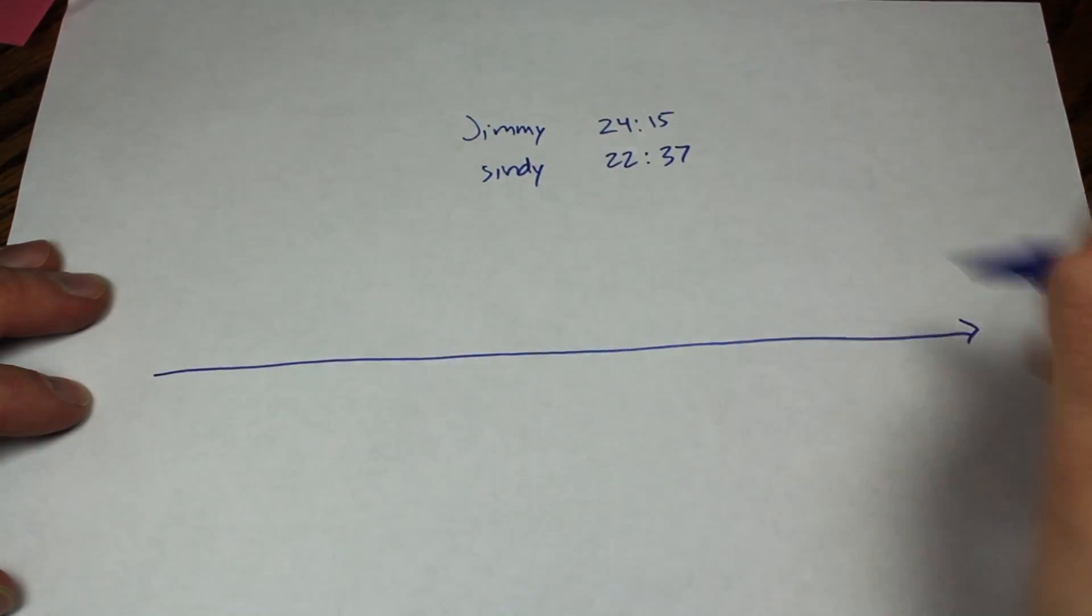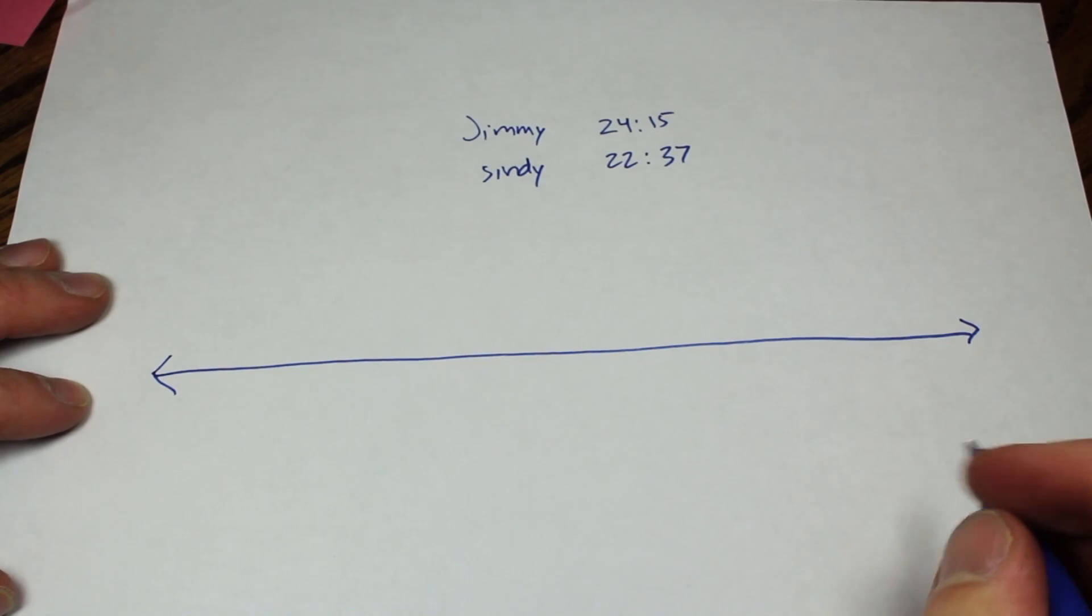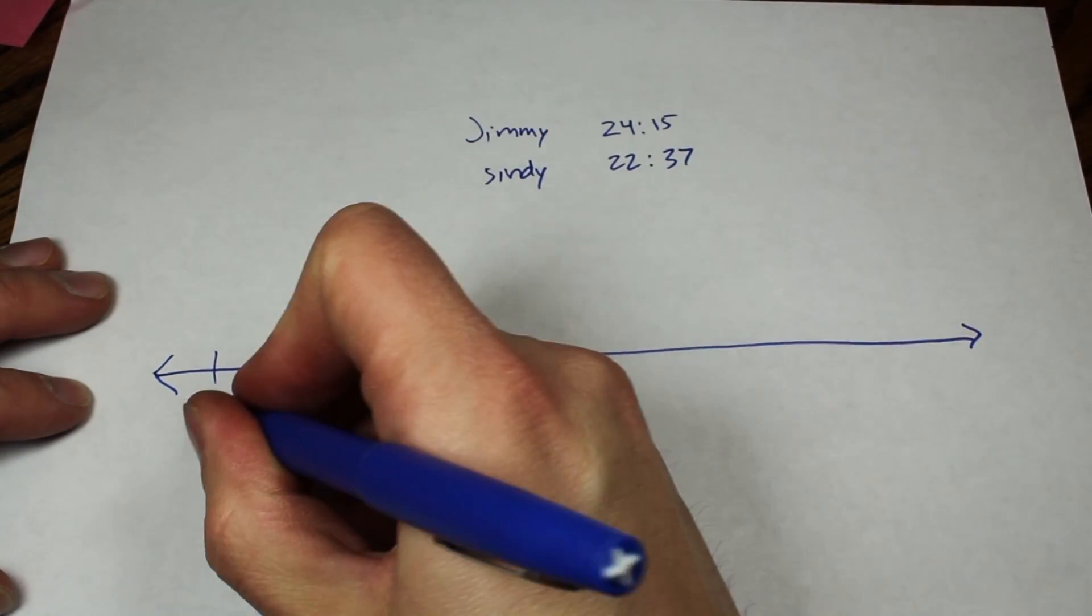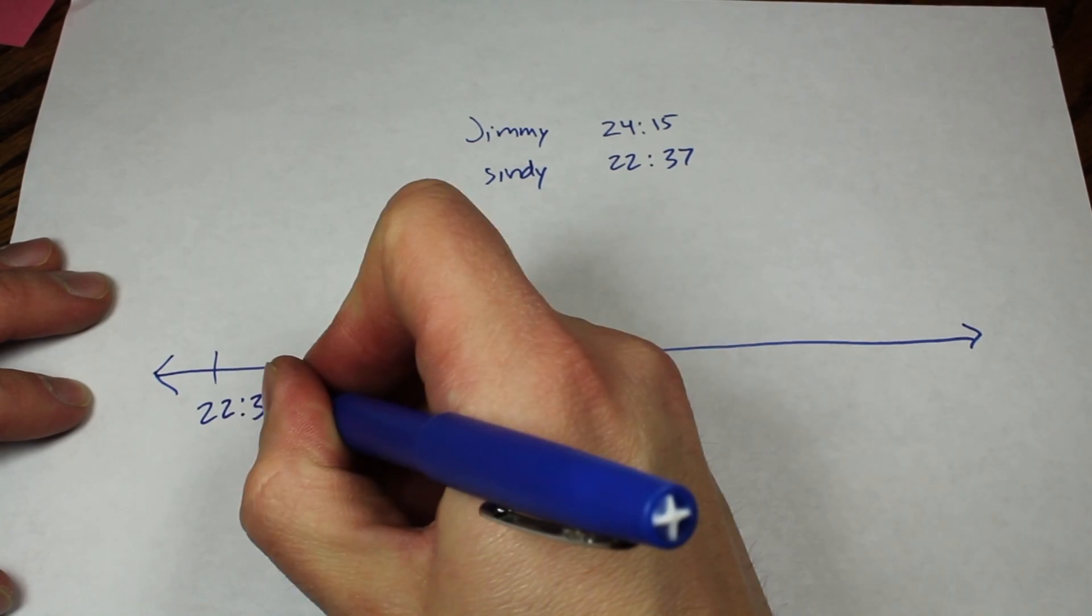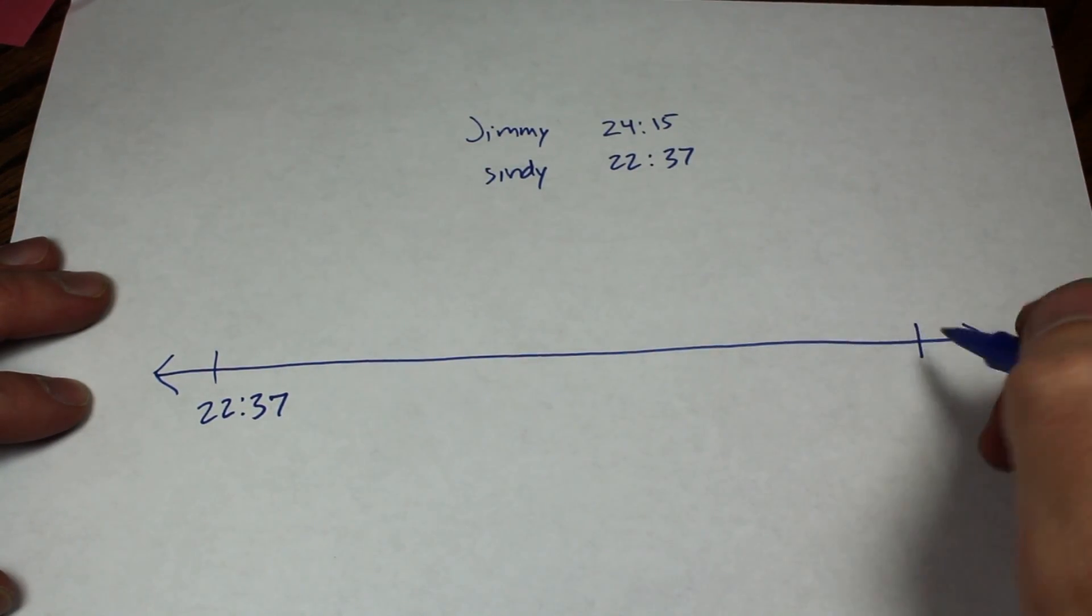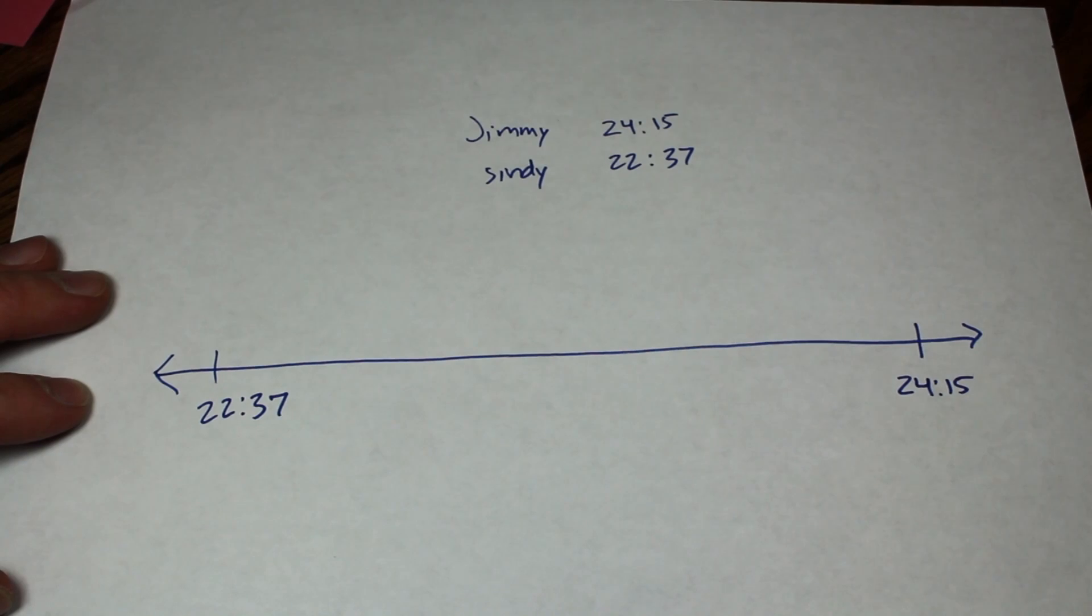And then, the shorter time is going to go on the left, 22:37, and the larger or slower time is going to go on the right.